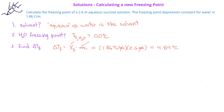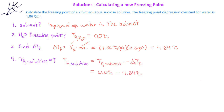In order to find the new freezing point of the solution, we take the freezing point of the pure solvent — 0.0 degrees Celsius — and subtract the change in the freezing point, which is 4.84 degrees Celsius. This gives us the freezing point for the sucrose solution of negative 4.84 degrees Celsius.